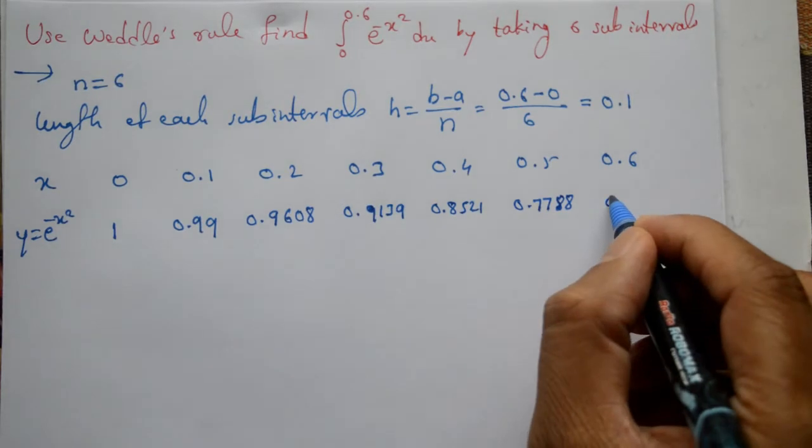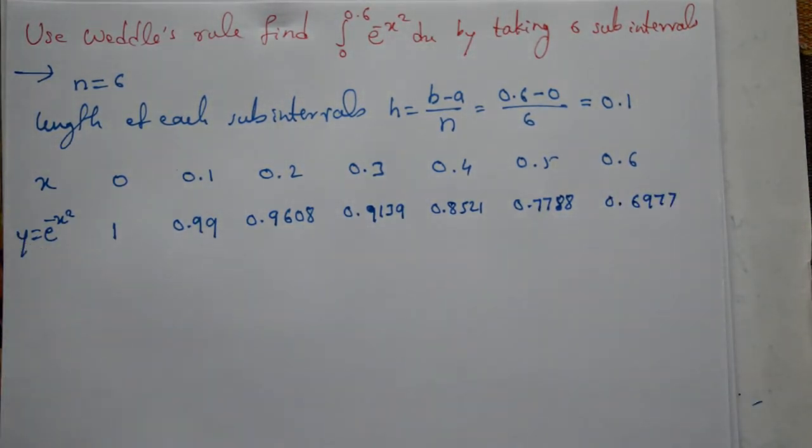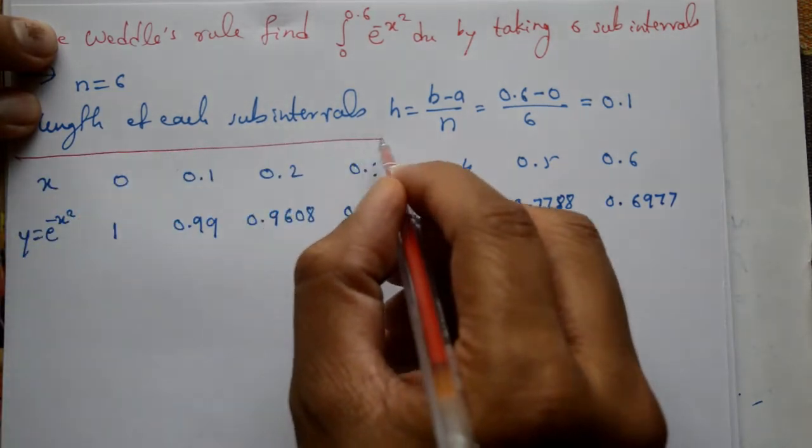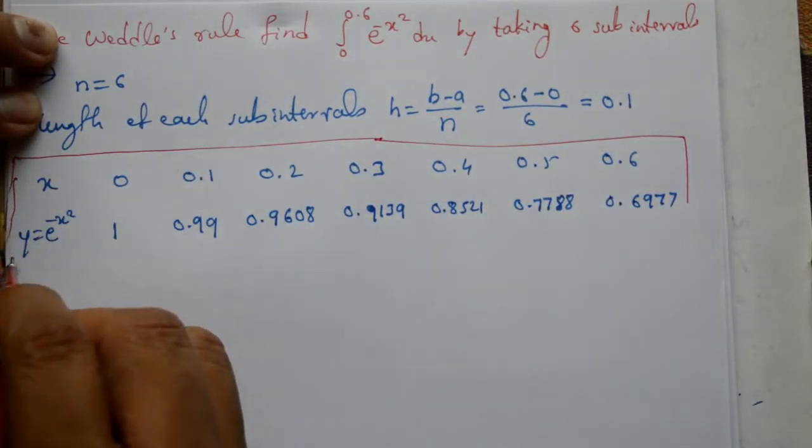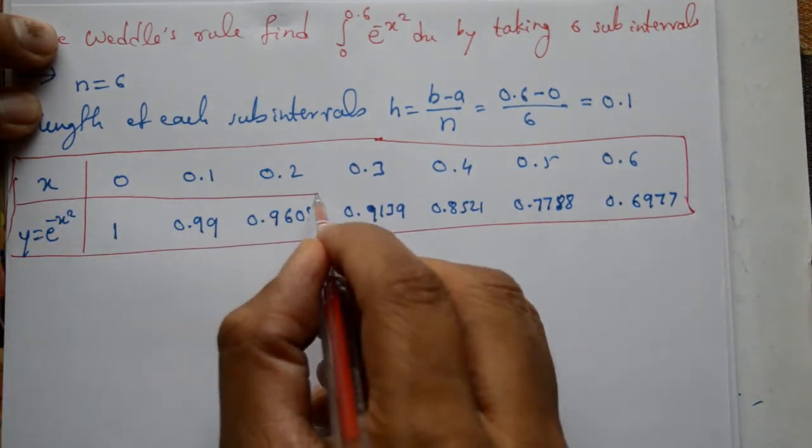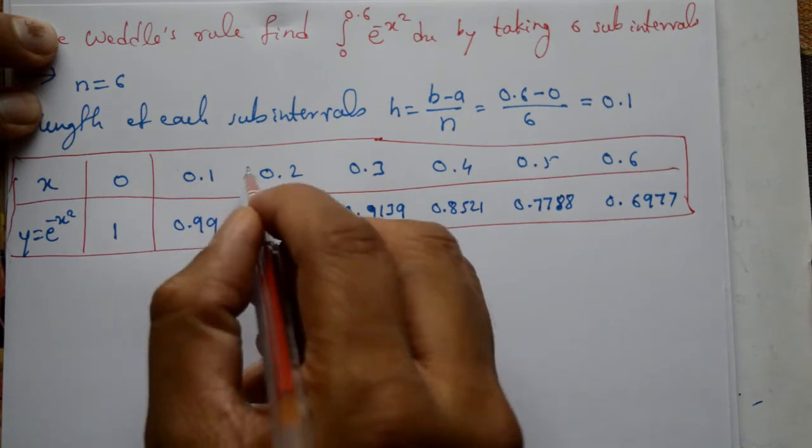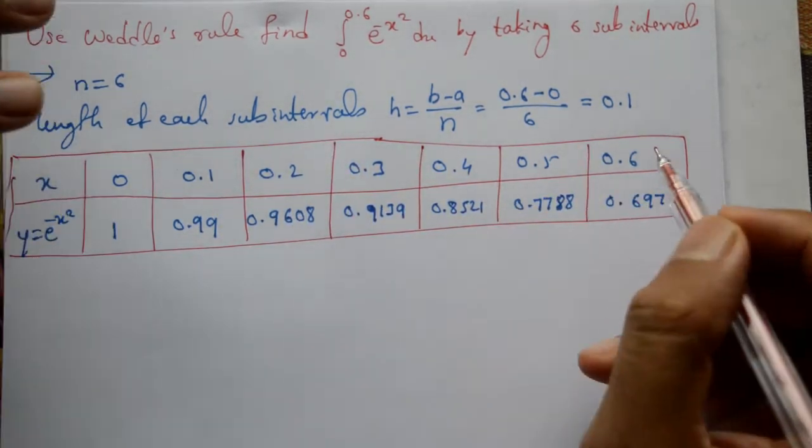Then substituting 0.5 gives 0.7788. Substituting 0.6 gives 0.69 double seven. This is how the table will be formed.